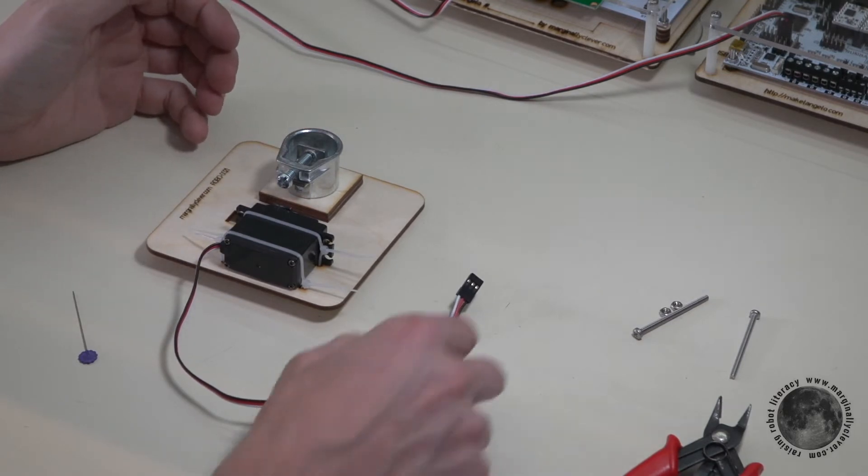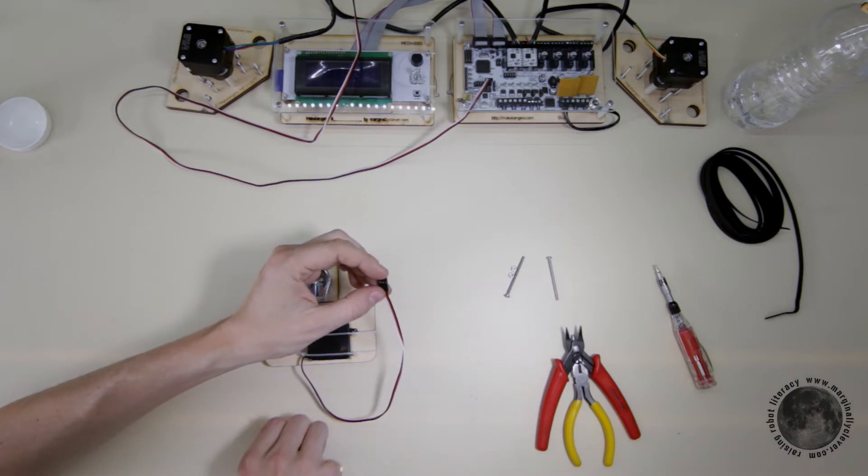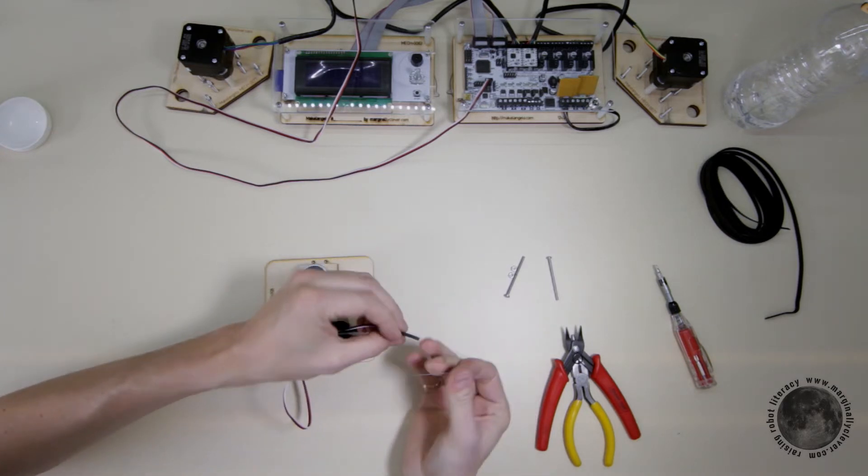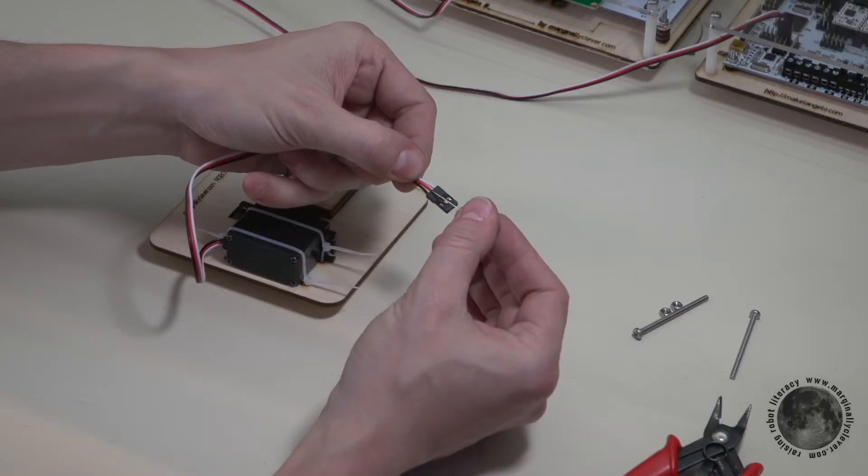For your Michelangelo 3, there's one little trick with this wiring. You need to reverse, you need to swap the white wire and the red wire.